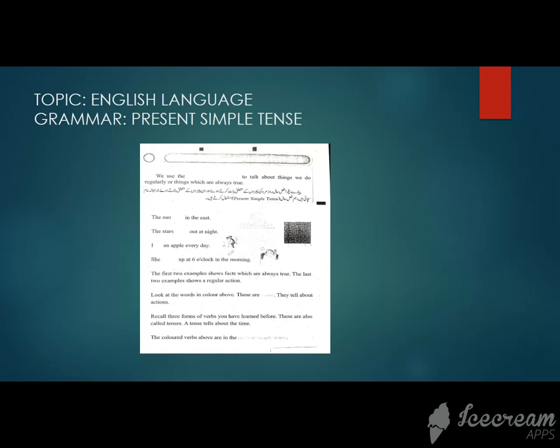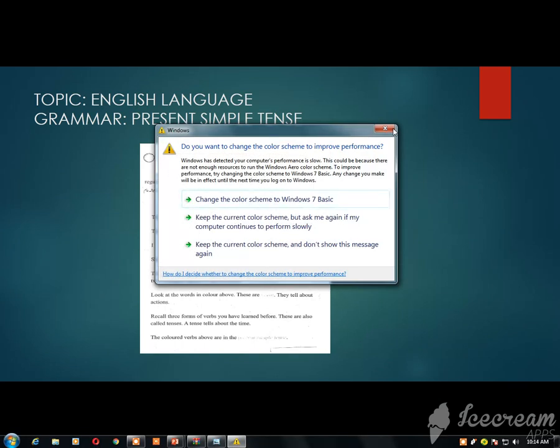Recall three forms of verbs you have learnt before. These are also called tenses. Now we have three words like color, colored, colored. We have also said that, you remember we said tense. We have three words, we have also written tense. The colored words above are in the present simple tense.